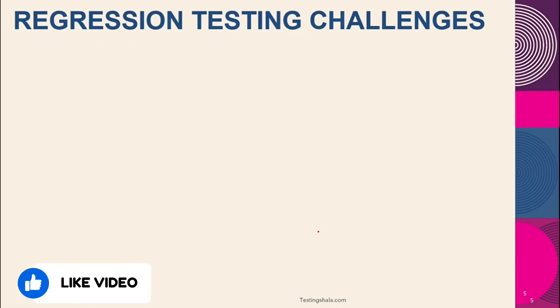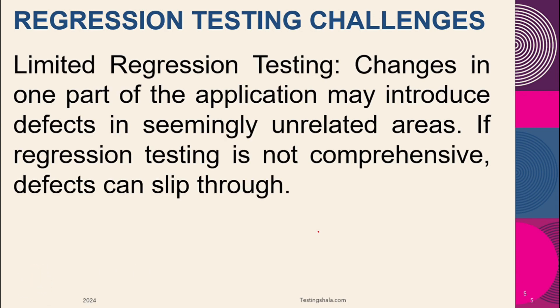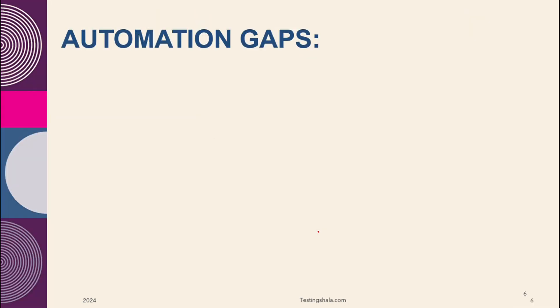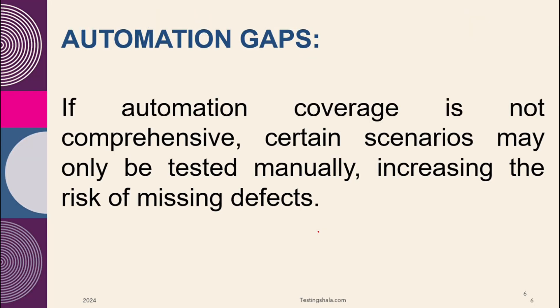The next reason is regression testing challenges, which could also be a reason for missing defects. Because of limited time, we may not be able to execute every part of our regression testing, and some defects can slip through due to limited regression testing coverage.